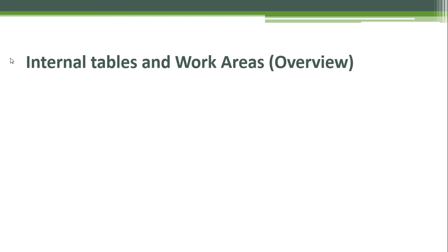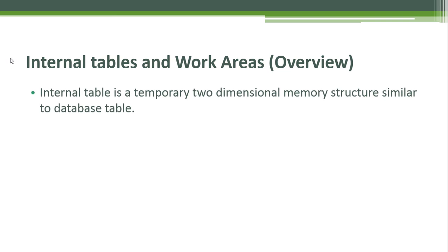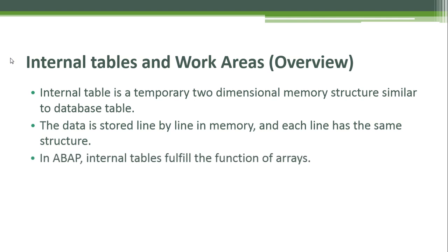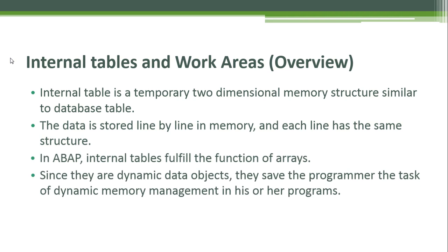Internal tables and work areas overview. An internal table is a temporary two-dimensional memory structure similar to a database table. The data is stored line by line in memory and each line has the same structure. In ABAP, internal tables fulfill the function of arrays. Since they are dynamic data objects, they save the programmer the task of dynamic memory management in their programs.